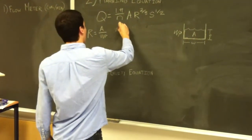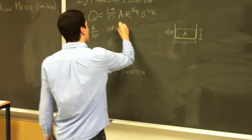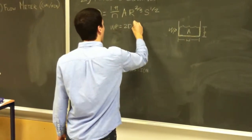So like I said, the wetness perimeter is going to be equal to two times the depth plus the width.